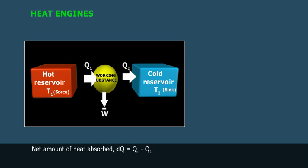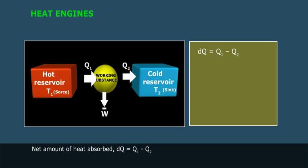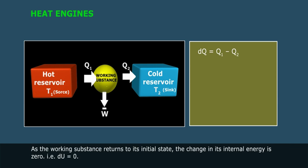Net amount of heat absorbed, ΔQ is equal to Q1 minus Q2. As the working substance returns to its initial state, the change in its internal energy is zero. That is, ΔU is equal to zero.